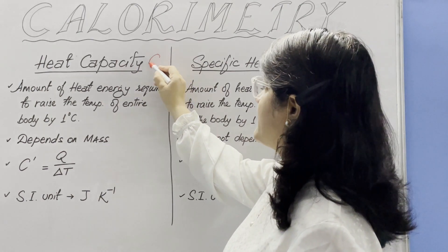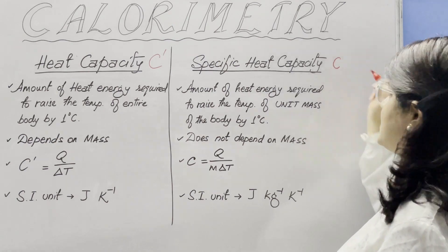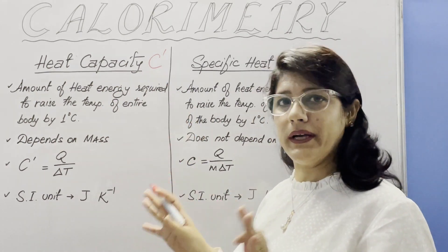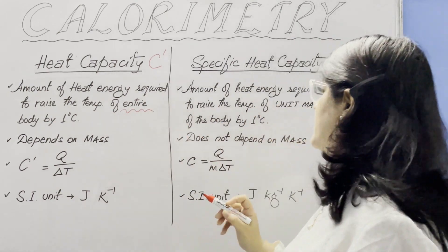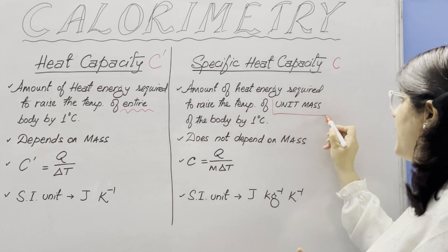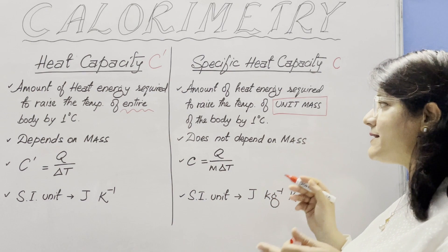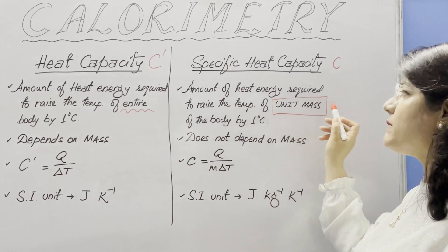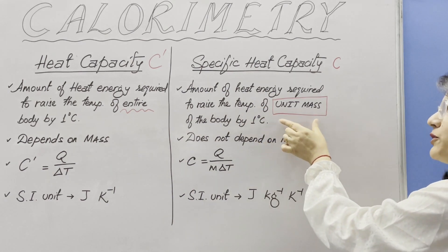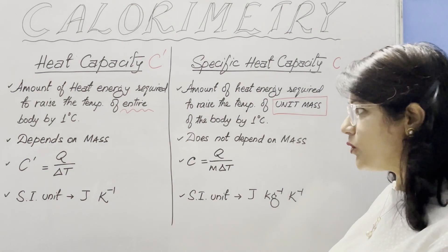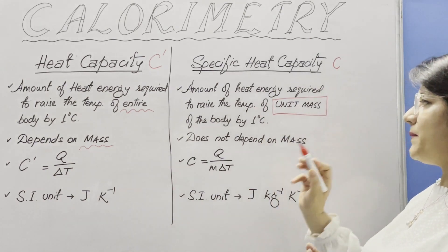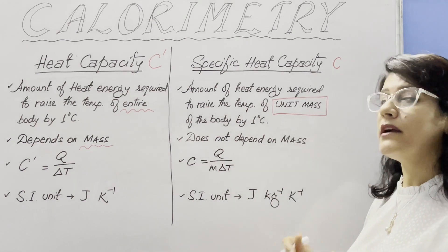Let us denote heat capacity by C′ and specific heat capacity by small c. Heat capacity is the amount of heat energy required to raise the temperature of an entire body by 1 degree Celsius. Specific heat capacity is the heat energy required for unit mass by a change in temperature of 1 degree Celsius. Heat capacity depends on mass and the substance, but specific heat capacity does not depend on mass — it is a characteristic property of the substance.